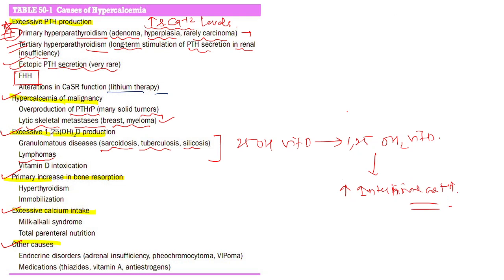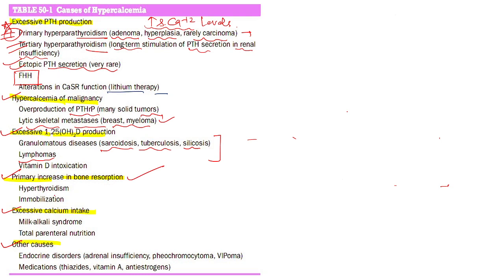Other conditions causing primary increase in bone resorption include hyperthyroidism, immobilization, and lytic skeletal metastasis as in breast carcinoma and myeloma. Excessive calcium intake as in milk-alkali syndrome or total parenteral nutrition can also cause hypercalcemia. Endocrine disorders like adrenal insufficiency, pheochromocytoma, and VIPoma can lead to hypercalcemia. Important medications include thiazides, vitamin A, and anti-estrogens — all leading to hypercalcemia with suppressed PTH.